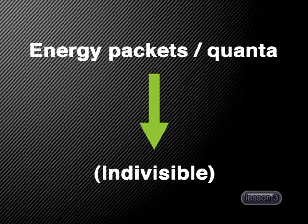Max Planck also realized that these energy packets, or quanta, are indivisible, so we cannot get a fraction of a quantum being radiated. In 1905, Albert Einstein used the work of Max Planck to make conclusions about the nature of electromagnetic radiation based on what happens when light strikes the metal plate in the photoelectric effect experiment.